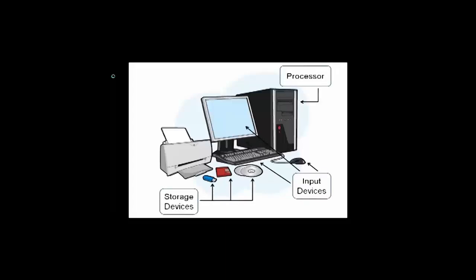A computer system is defined as a combination of components designed to process data and store files. It consists of four major hardware components: input devices, output devices, processor and storage devices.